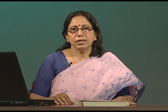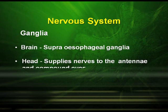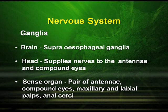The nervous system includes the ganglia and the brain, which is a supra-esophageal ganglion that supplies nerves to the antennae and the compound eyes. The sense organs are the pair of antennae, the compound eyes, maxillary and labial palps, and anal cerci.